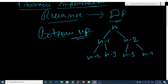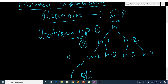This continues until the base cases of 0 or 1. At the first level there is one call, at the second level there are two calls, at the third level there are four calls, and at the last level there are 2 raised to power n-1 calls.